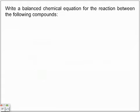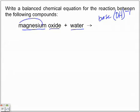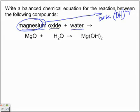Let's write a balanced chemical equation for the reaction between magnesium oxide and water. We're looking for oxide and water — those are our hints that we have one of these special types of synthesis reactions. We know we're going to form a base, so this magnesium, because we are forming a base and bases have the OH, is going to combine with that OH to form magnesium hydroxide.